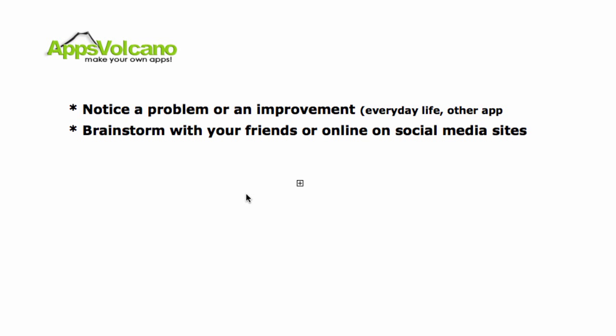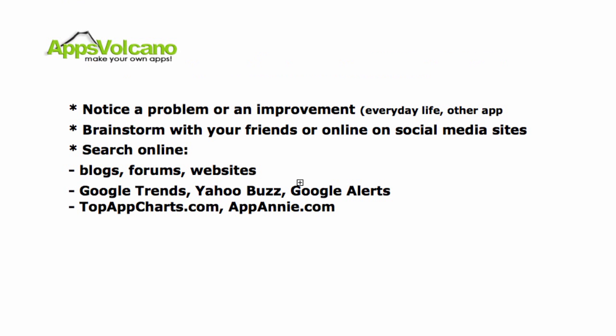The next way is to simply search online. When you type into a search engine 'best ideas for mobile apps,' you will get tons of results. You can also check blogs, forums, and websites. Google Trends and Yahoo Buzz are great for checking what's hot at the moment and what's in demand.